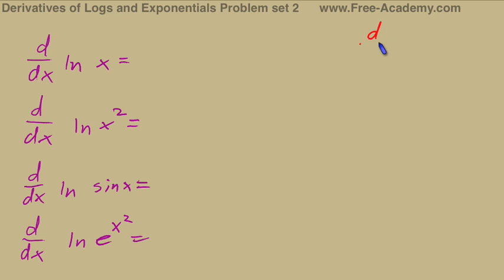Now recall that our formula for these problems is going to be the derivative of ln of u equals u prime over u. So these are practically no-brainer problems. Whatever we're taking the natural log of is our u. We take the derivative of that and divide it by the original.